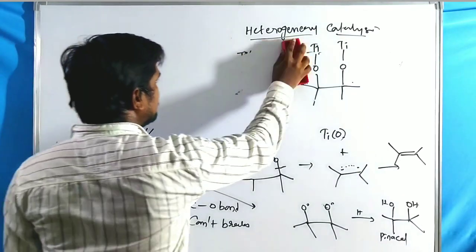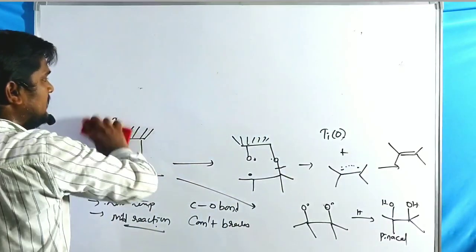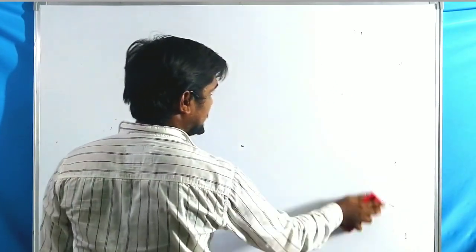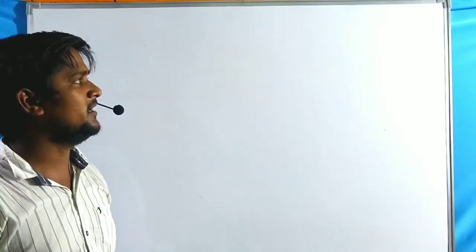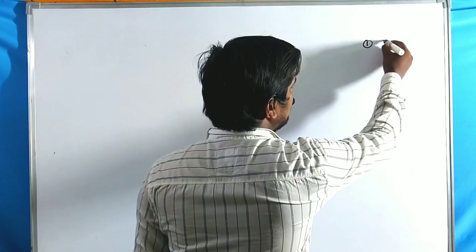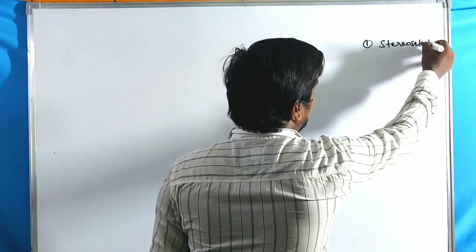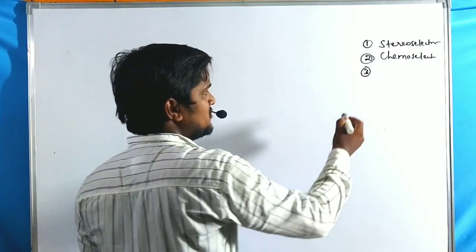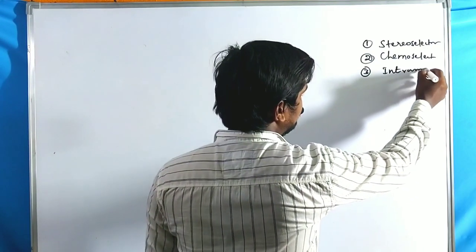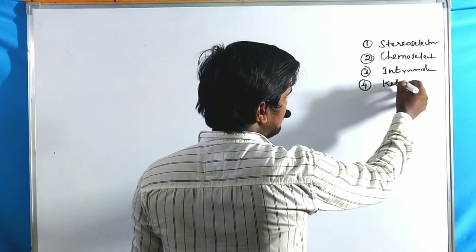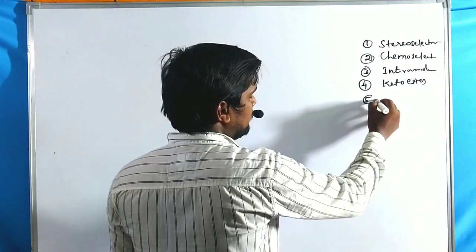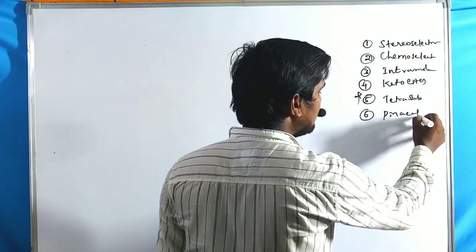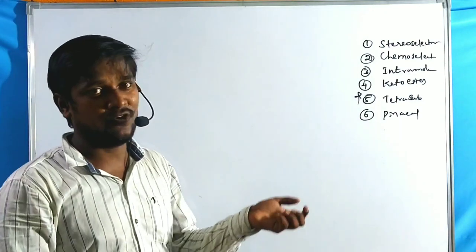Now let us go through the important features of McMurray Coupling: (1) stereoselectivity, (2) chemoselectivity, (3) intramolecular reactions, (4) keto-esters can also undergo the reaction, (5) tetra-substitution, and (6) pinacol formation. These are the general important features of McMurray Coupling.